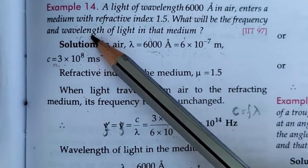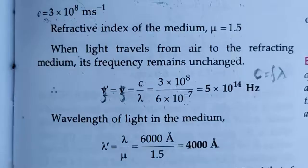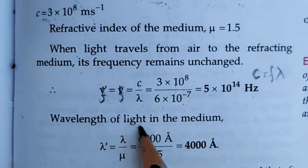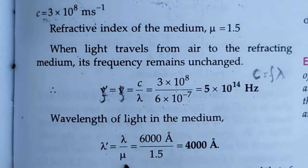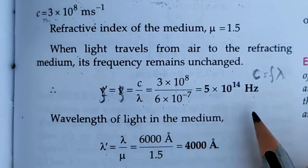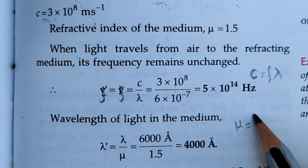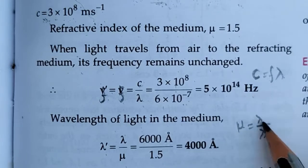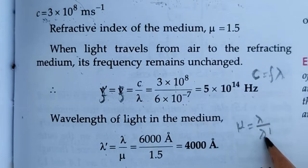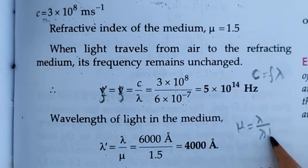We have to find the wavelength of light in the medium. Wavelength in the medium lambda dash equals lambda by mu, because we know mu equals lambda by lambda dash, where lambda is wavelength in vacuum divided by wavelength in that medium.